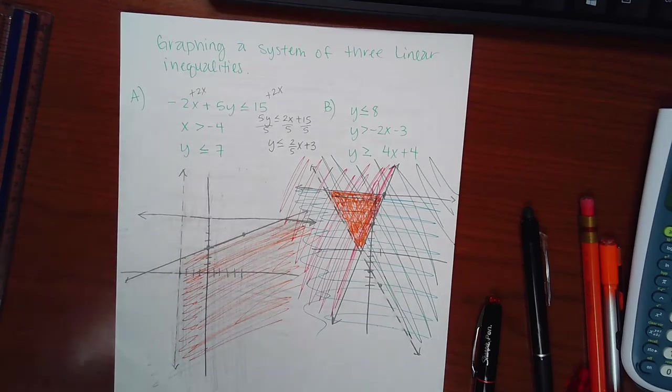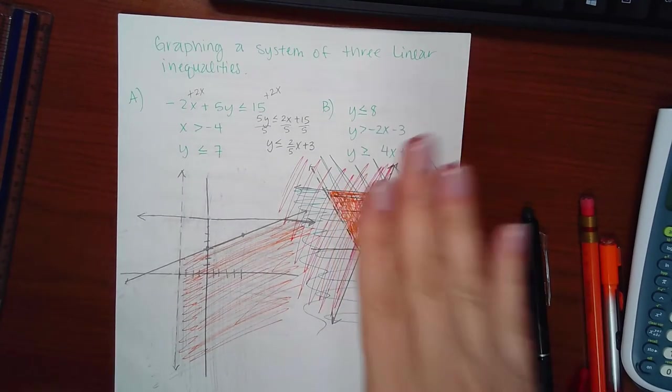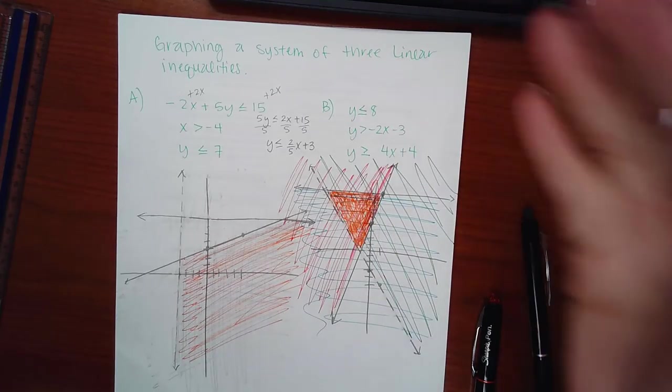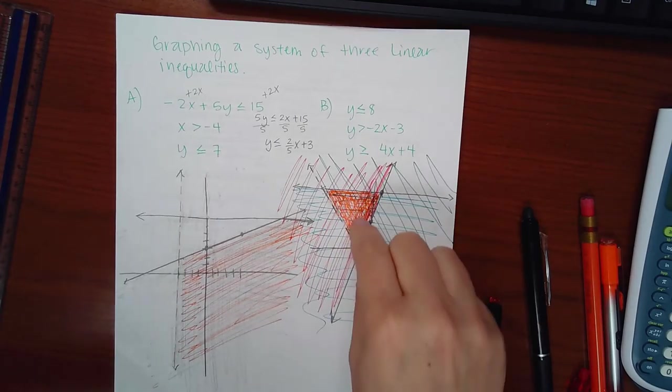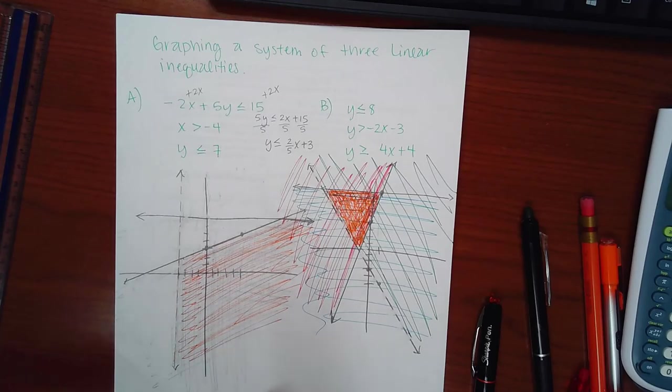It's hard to do on the computer. You cannot do this problem on the computer. You need to do it on your paper, and then just put in the lines and the one final answer shaded region in the computer. You cannot shade in three different colors on the computer to find out when they overlap. That has to be done on paper. And then you just type in the final answer on the computer.